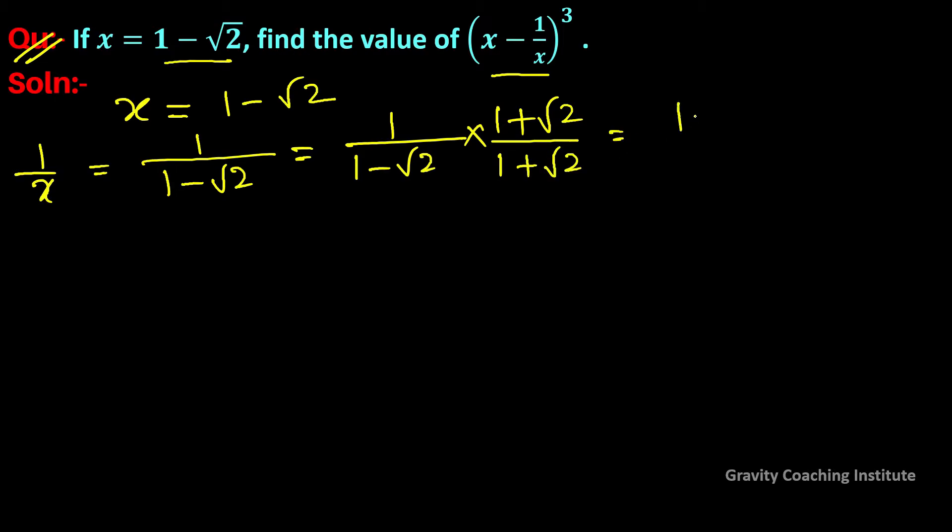Equal to 1 plus root 2 upon, and we use the identity a plus b into a minus b equal to a square minus b square in its denominator. We get 1 whole square minus root 2 whole square.